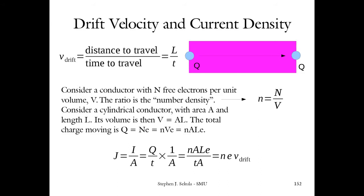Resistance is the material's tendency to resist the movement of charge through it. If I put 20 volts on a material with a low resistance — say one ohm — and the same voltage on another material with four times the resistance — four ohms — in the first material I'll get a big current, and in the second a much smaller current, because that material resists the flow of electric charge through its volume much more effectively.